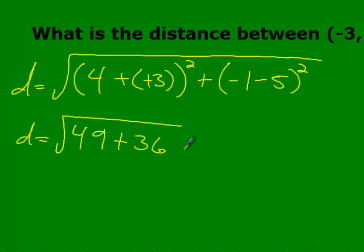In physics, you always heard them say that distance can't be negative — you can move in a negative direction, but you're still in movement. This is why: if you're using the distance formula, you can't have a negative because you're square-rooting to find your distance. Distance traveled is always going to be positive. So 49 plus 36 is 85, and the square root of 85 is not a perfect square, so we leave it as √85.